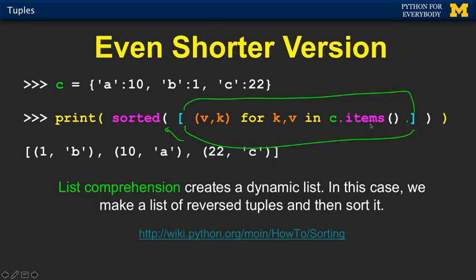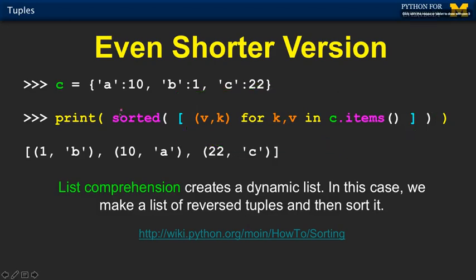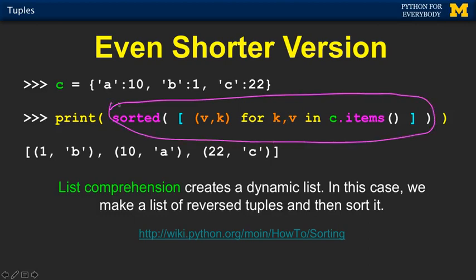I take what comes out of sorted and pass that into print. I forgot to put reverse equals true on here, so it comes out but not reversed — it's value-key but not reversed. So you get the idea.